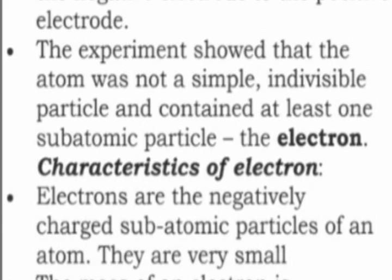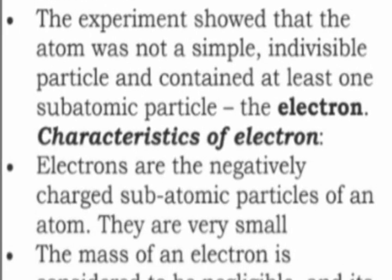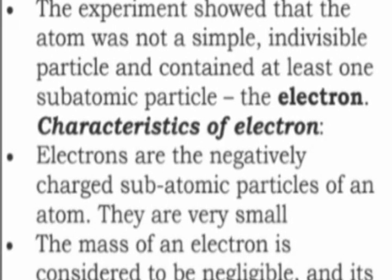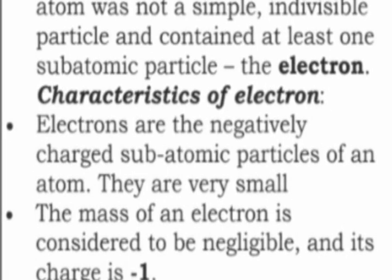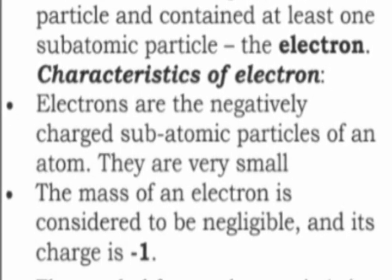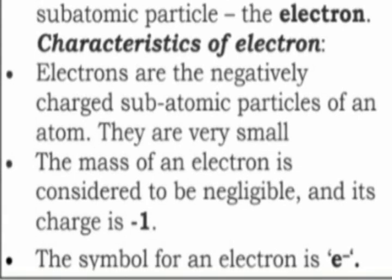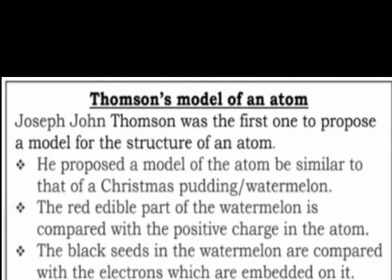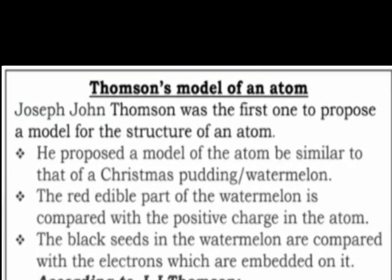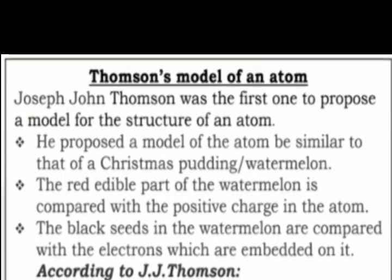Characteristics of electron: Electrons are the negatively charged subatomic particle of an atom. They are very small. The mass of an electron is considered to be negligible and its charge is minus one. The symbol for an electron is E minus.